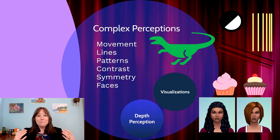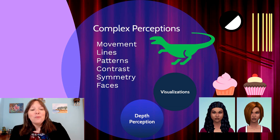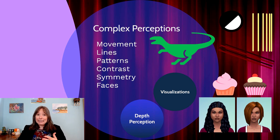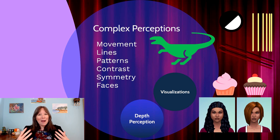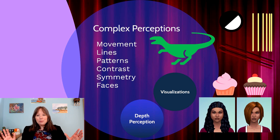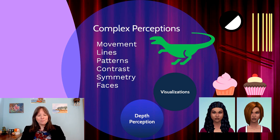We have neurons designated to pick up on movement — somewhat like the T-Rex from Jurassic Park — only firing when things move. We have neurons designated for lines, with different neurons for vertical versus horizontal versus diagonal lines, contrast, patterns, and textures. We also know that our brain processes visual information differently if it's symmetrical versus non-symmetrical — a symmetrical image is processed faster and with less effort.